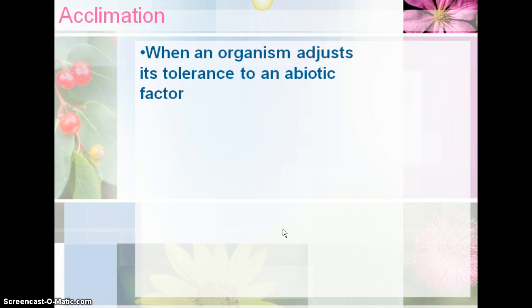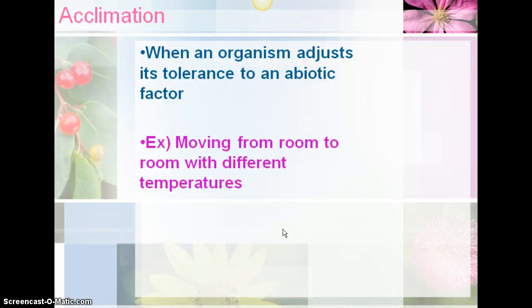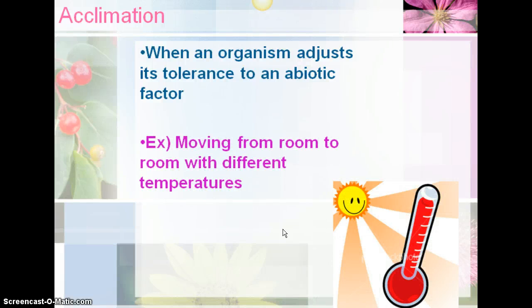Acclimation is the ability for the organism to acclimate or adjust to an abiotic factor — maybe temperature, soil type, or amount of water in that abiotic environment. An example would be moving from room to room with different temperatures. If you're uncomfortable in a particular temperature, you may put on a sweatshirt or take off a sweatshirt depending on what the temperature range is.